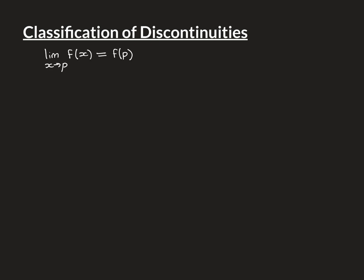A discontinuity is a point where the function is not continuous. The definition of continuity at a point P requires: one, the limit as x approaches P of f(x) must exist; and two, it must equal the value of the function at P. There are different ways in which this can fail, and that gives rise to the different types of discontinuity.